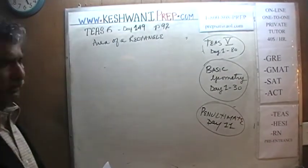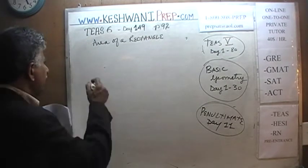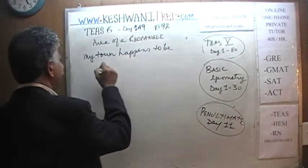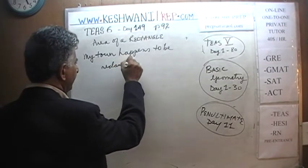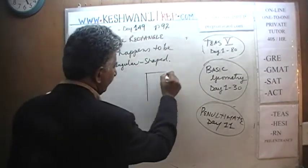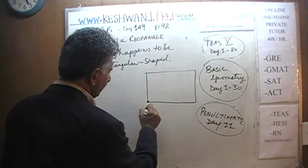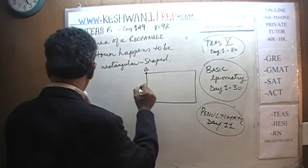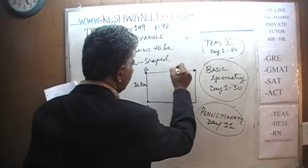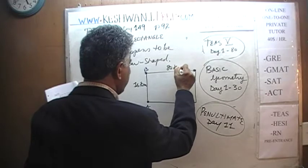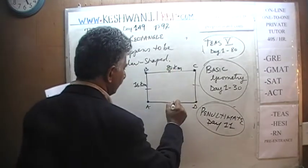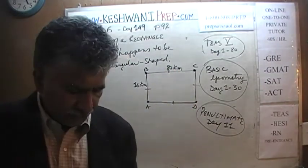Back to our work — area of a rectangle. I live in a town where my town happens to be rectangular in shape. From point A to point B of my town is 16 kilometers, and from this end of the town to the other end is 80 kilometers. Since this is a rectangle, if this side is 16, the opposite side is also 16; if this side is 80, the opposite side is also 80. I want to find out the area of my town.